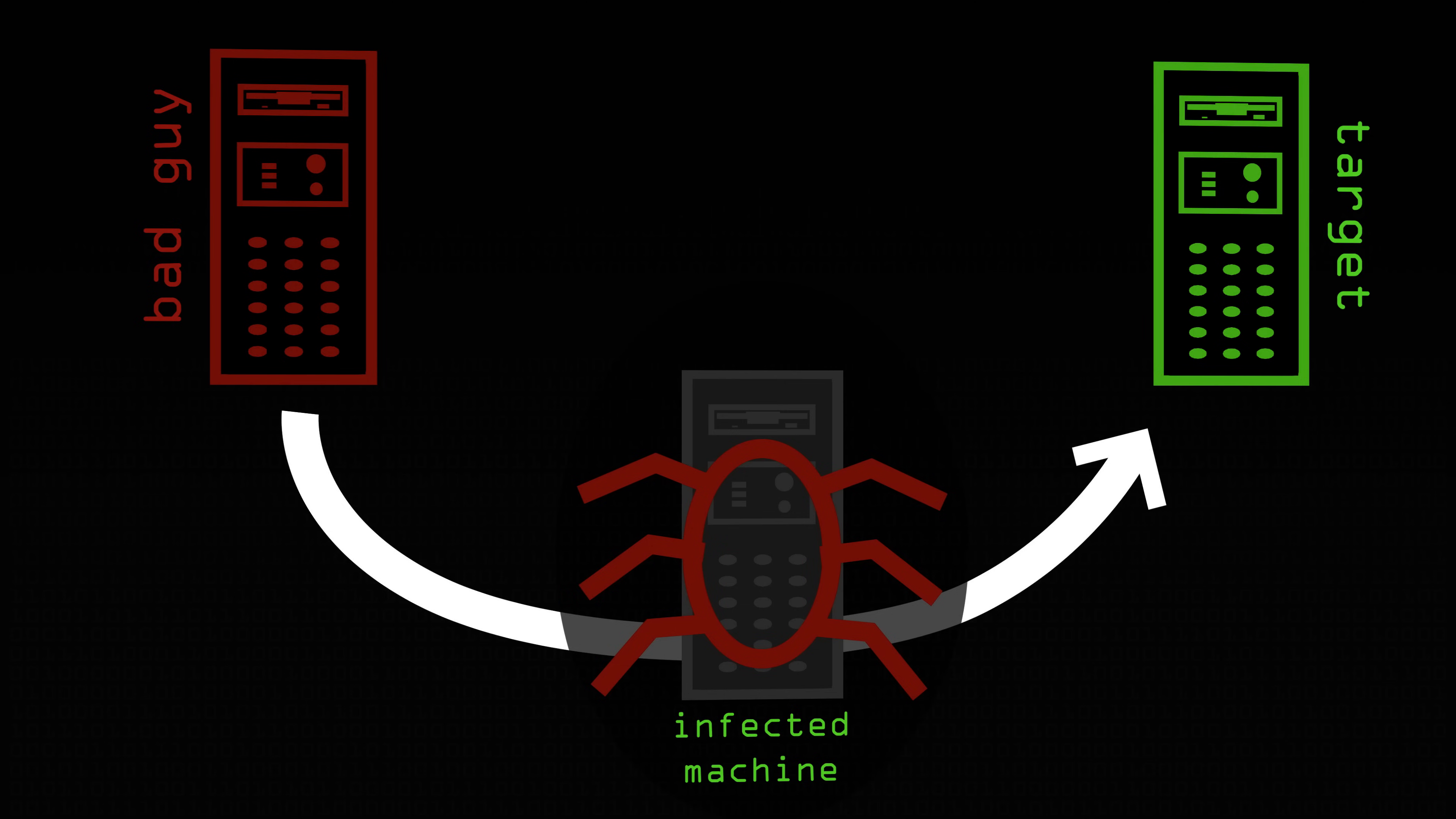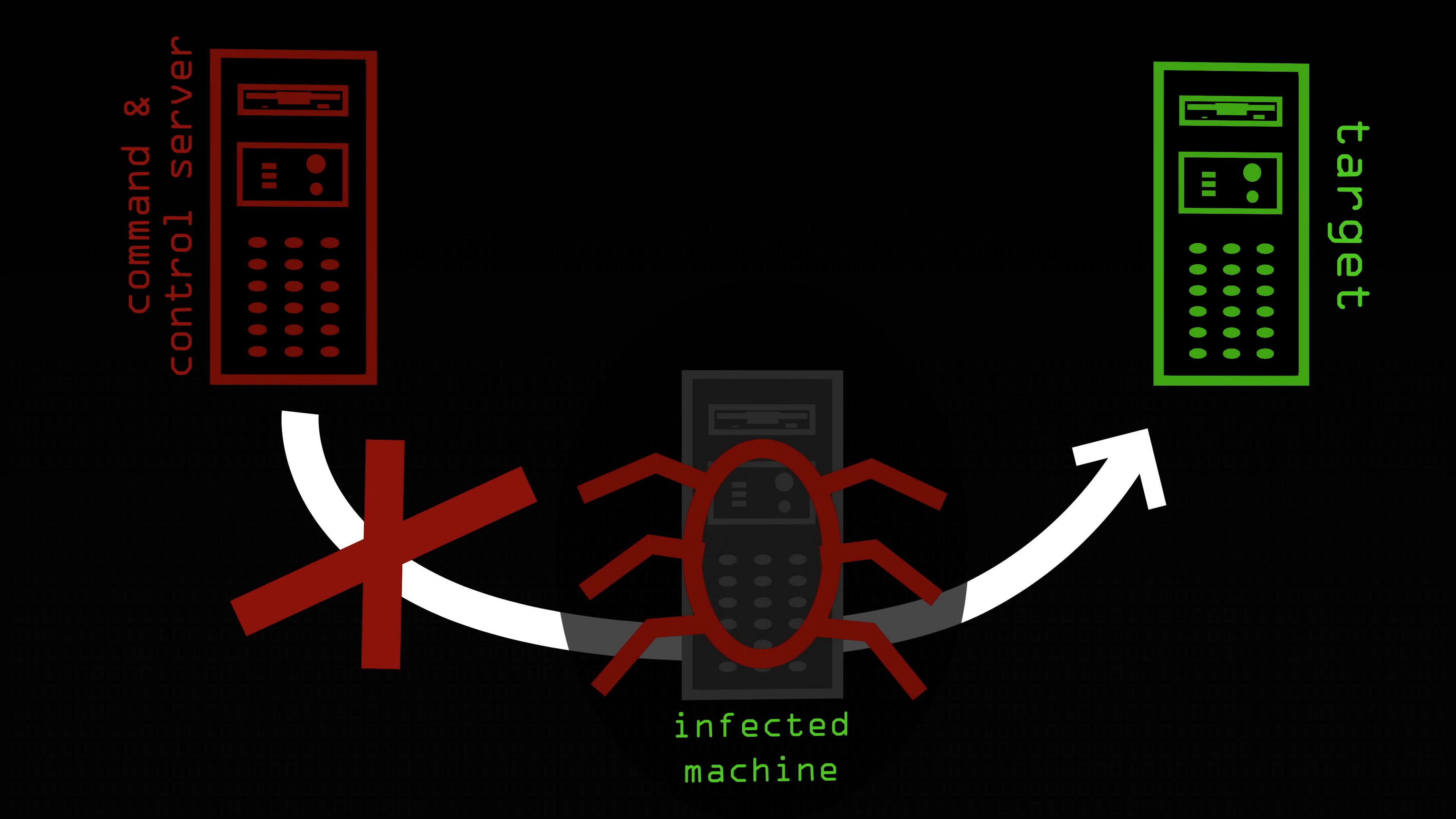A problem with the first botnets before Torpig was that they were having just one command and control server, or maybe more than one, but they were hard-coded. So one infected machine was communicating only to one command and control server. In the moment you were taking down the command and control server, the infected machine was not able to act anymore.